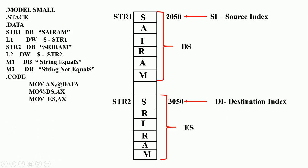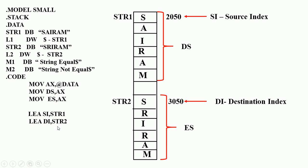Initialize data segment as well as extra segment. Then load effective address SI, str1 — so the starting address of string 1 is in SI. The starting address of string 2 is in DI. The count must be in CX. Move CX, 6.